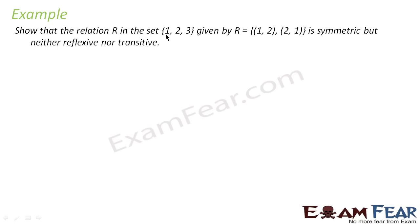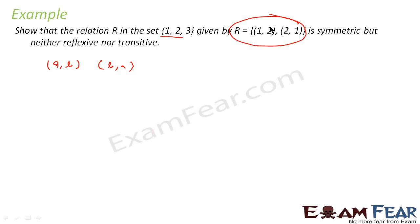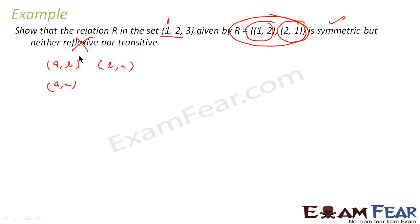This is a simple question. We have a set given and a relation given. We have to prove it is symmetric but not reflexive and not transitive. For symmetric: if (1, 2) exists, then flipping it gives (2, 1), which also exists — so it is symmetric. For reflexive: (1,1), (2,2), (3,3) should all exist, but they are not in the set — so it is not reflexive.